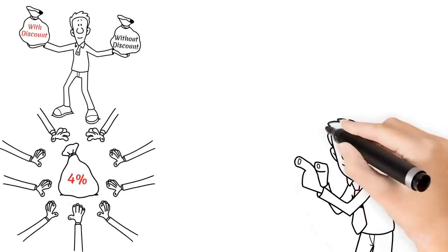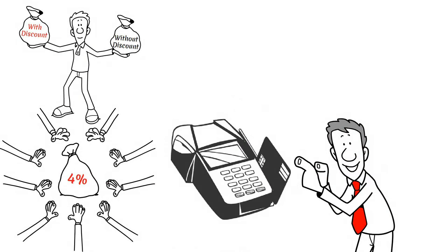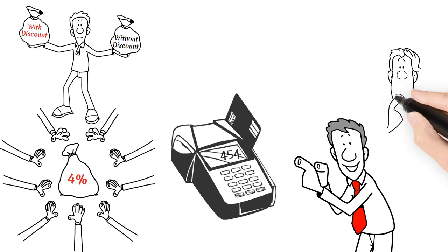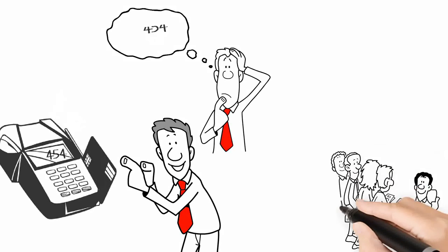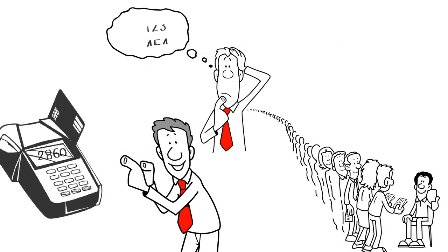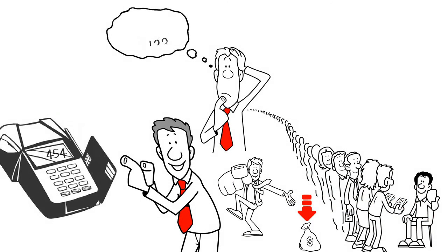In this case, any discount you chose to offer is automatically calculated in the terminal, so you don't have to do any math yourself. This really motivates cash customers. Regardless of how customers pay, you get to keep 100% of your current prices.